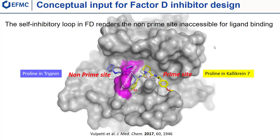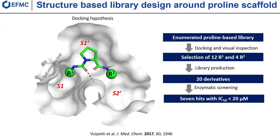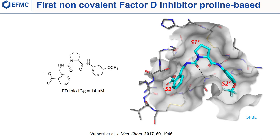Despite all the calicarin-7 inhibitors being tested as inactive towards factor D, we hypothesized that the proline core could bind similarly to calicarin-7 in factor D — as a nicely anchored scaffold at the S1' pocket, forming two hydrogen bonds and providing suitable vectors for extension towards the S1 and S2' pockets. Twenty compounds were selected for synthesis based on docking of the enumerated virtual library to the factor D X-ray structure and screened by an enzymatic assay, delivering the first attractive hits. These enabled the determination of the first X-ray structure of the first non-covalent factor D inhibitor, also confirming the binding hypothesis.